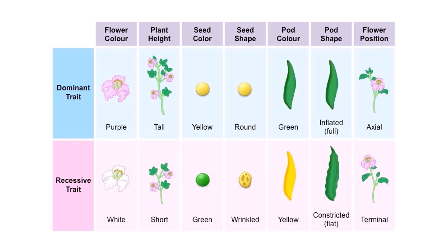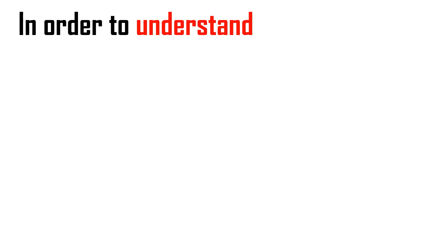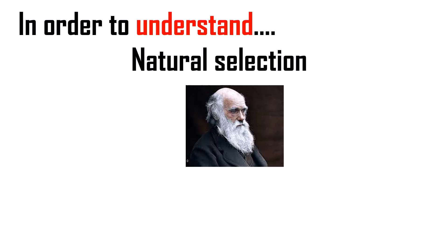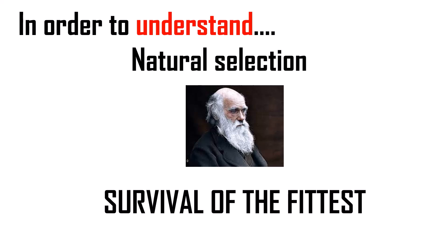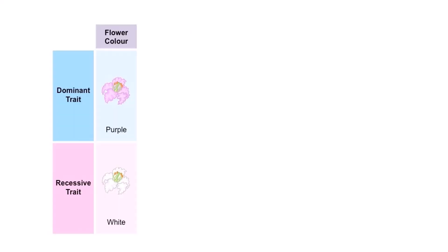These are the 7 contrasting traits of Mendel's experiment. It includes flower color, plant height, seed color, seed shape, pod color, pod shape and flower position. In each of these traits, we have a dominant trait and a recessive trait. So these two are going to be the contrasting traits in each of these traits. So in order to understand this concept, we should be aware of natural selection which was given by Charles Darwin. And this is basically survival of the fittest. Now let's have a look at the contrasting traits one by one.